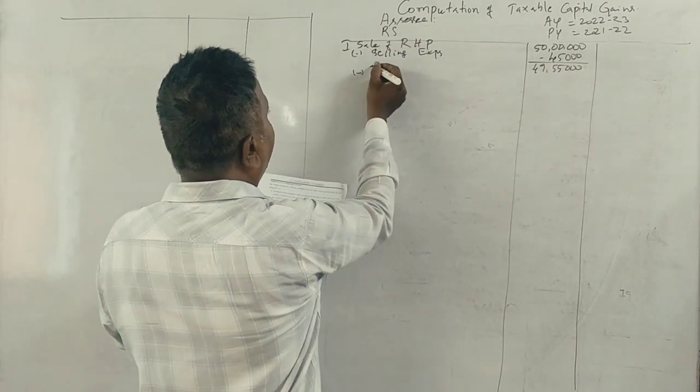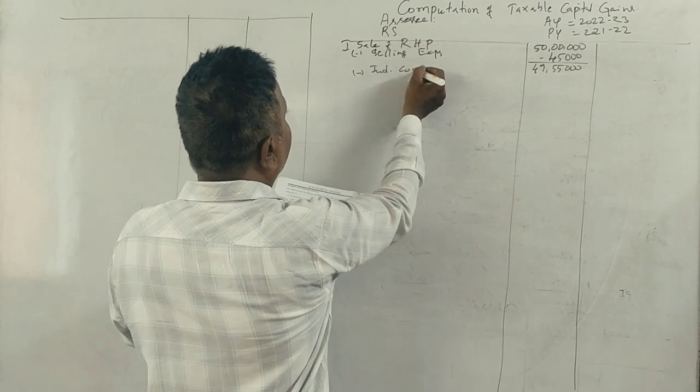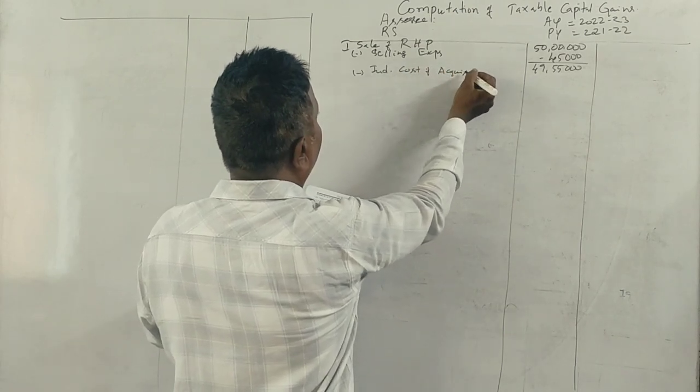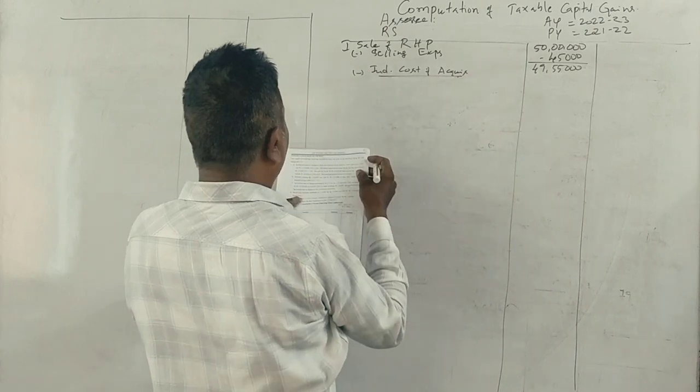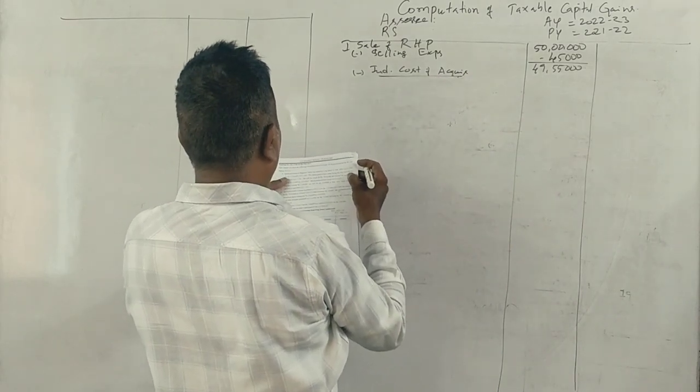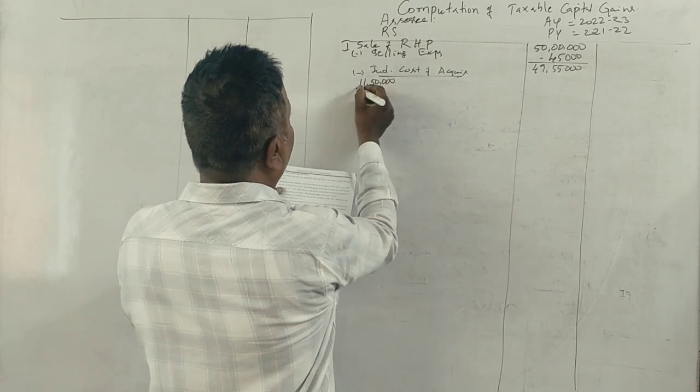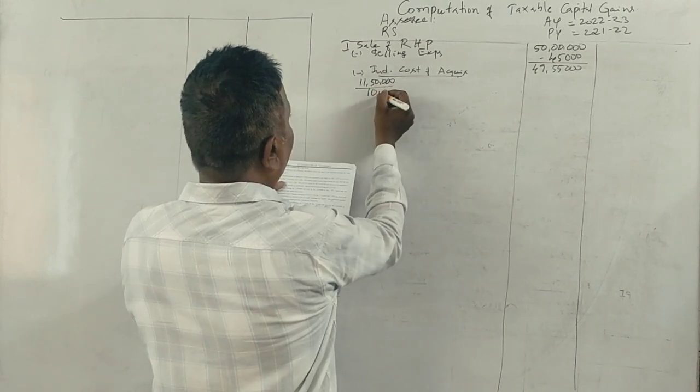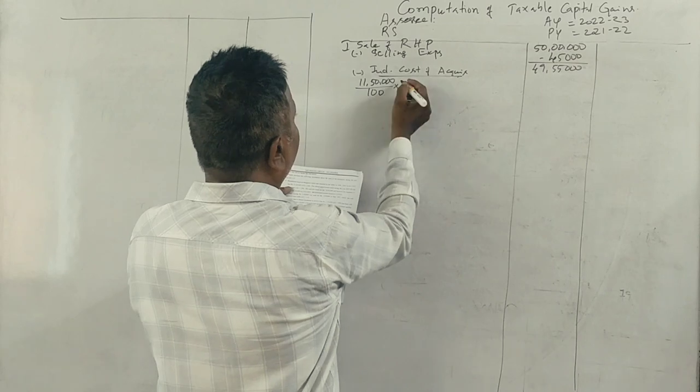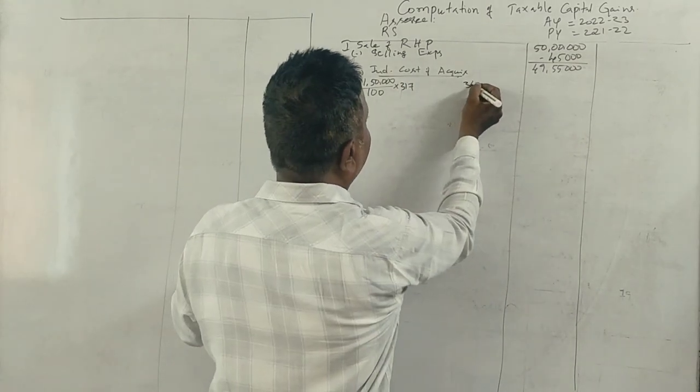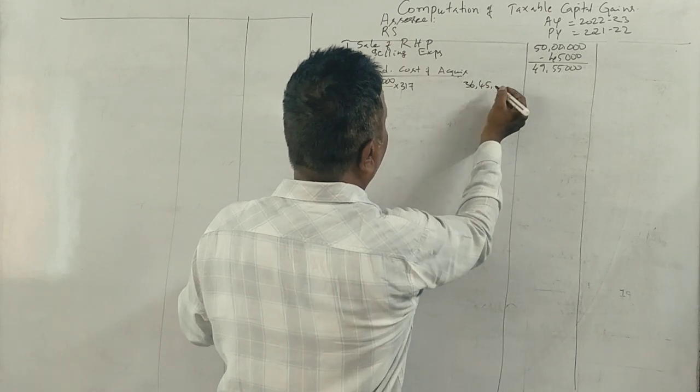Now, index cost of acquisition. Is this purchased? 11,50,000. Cost index, fair market value into 317. 36,45,500.